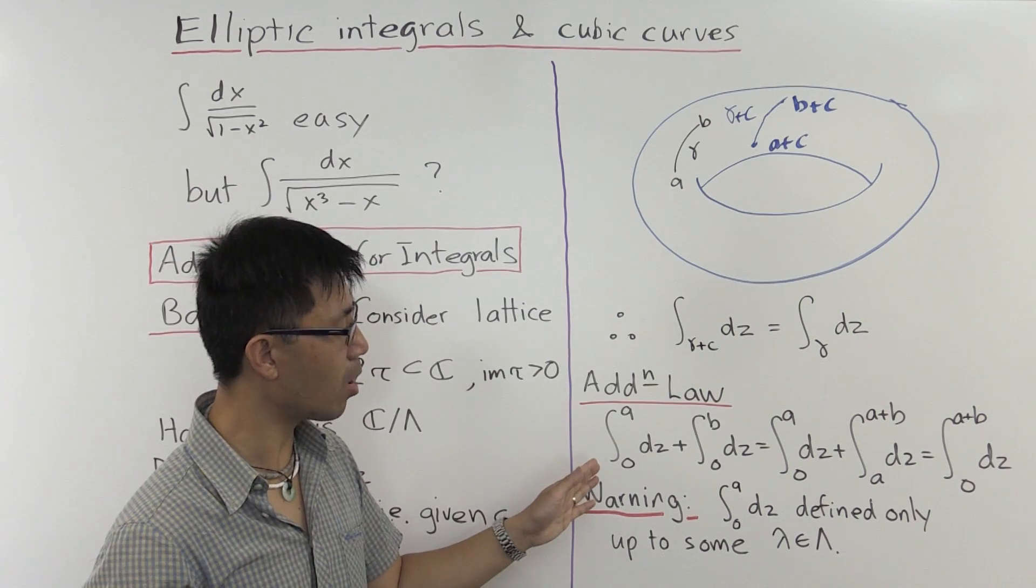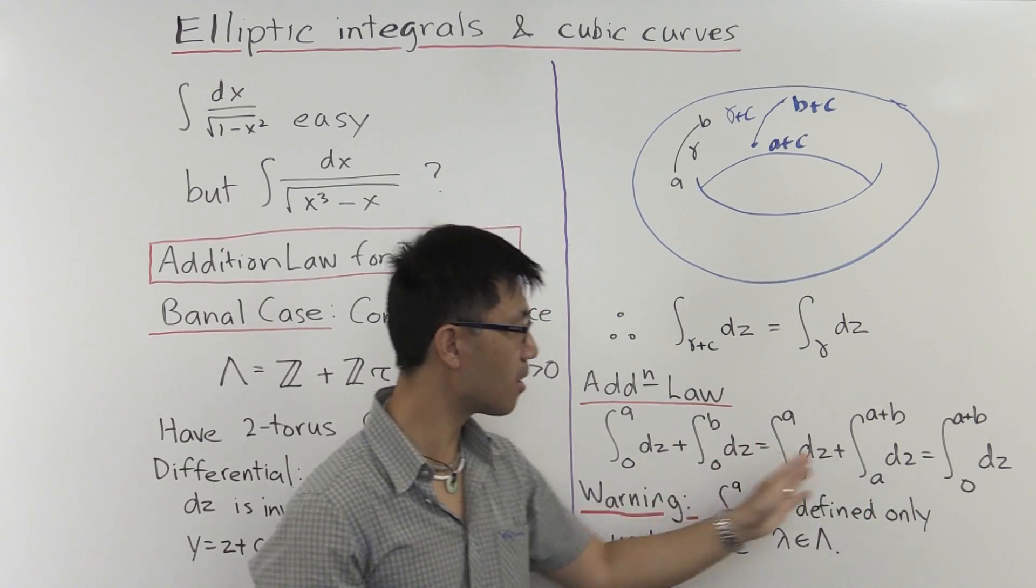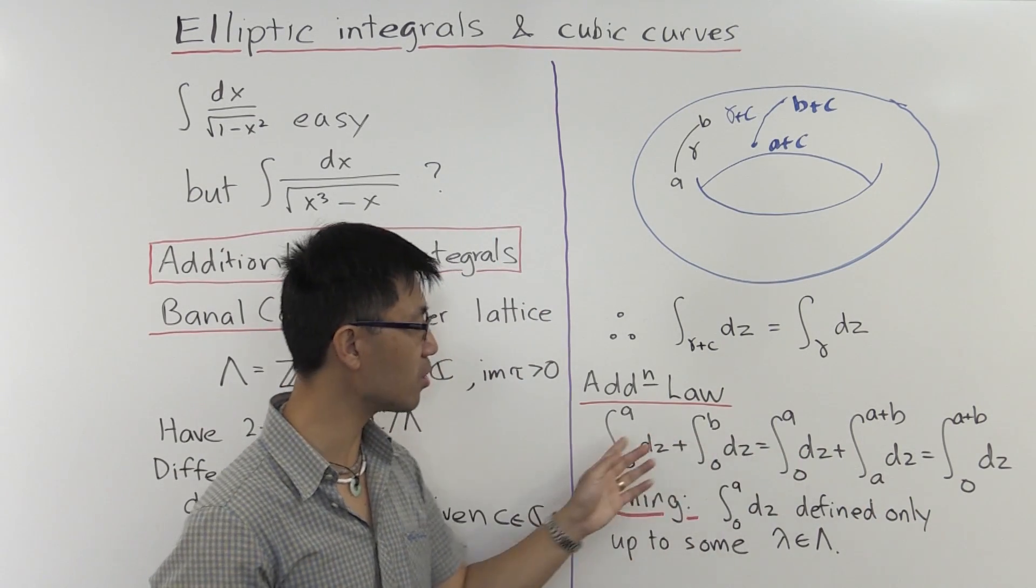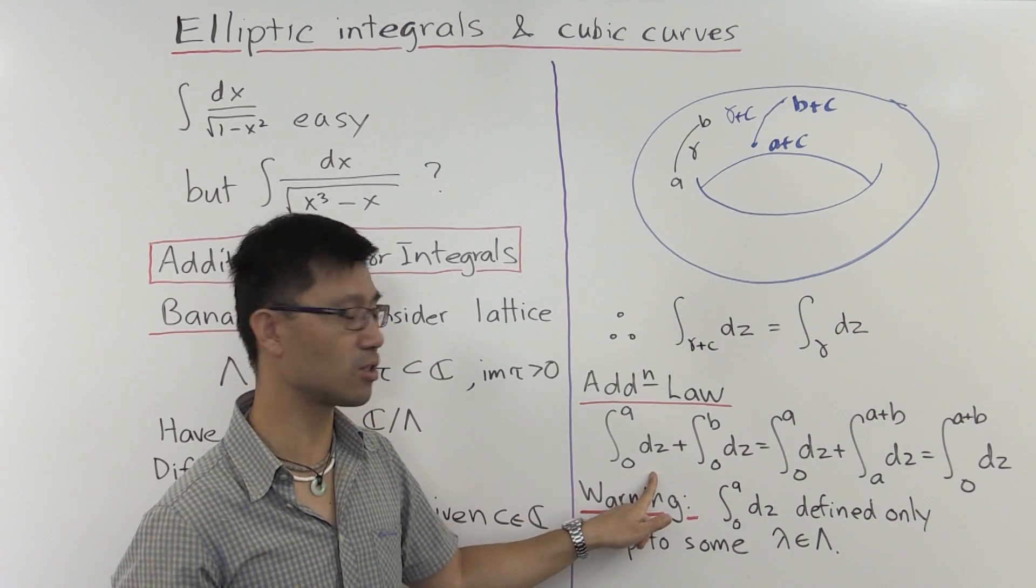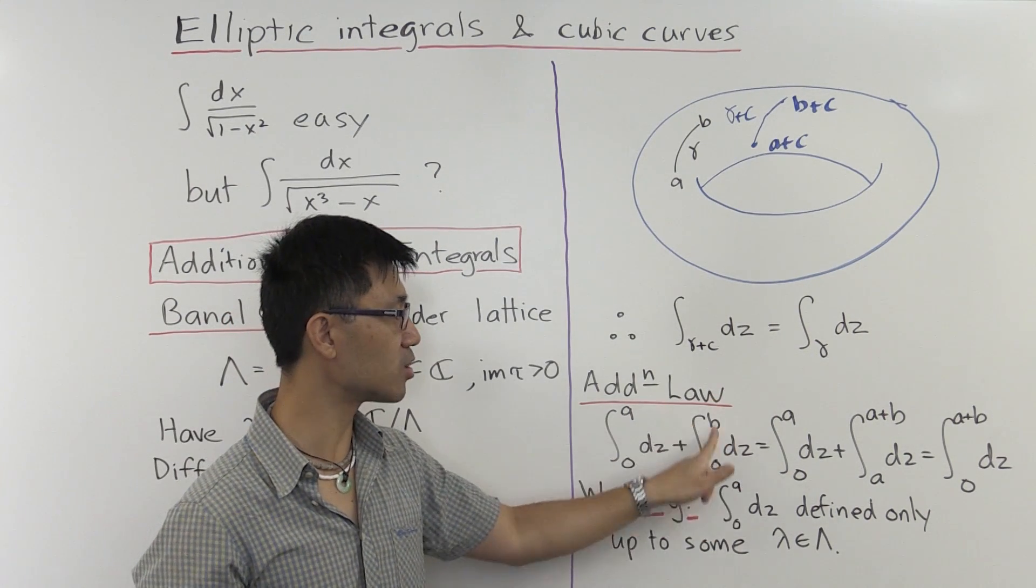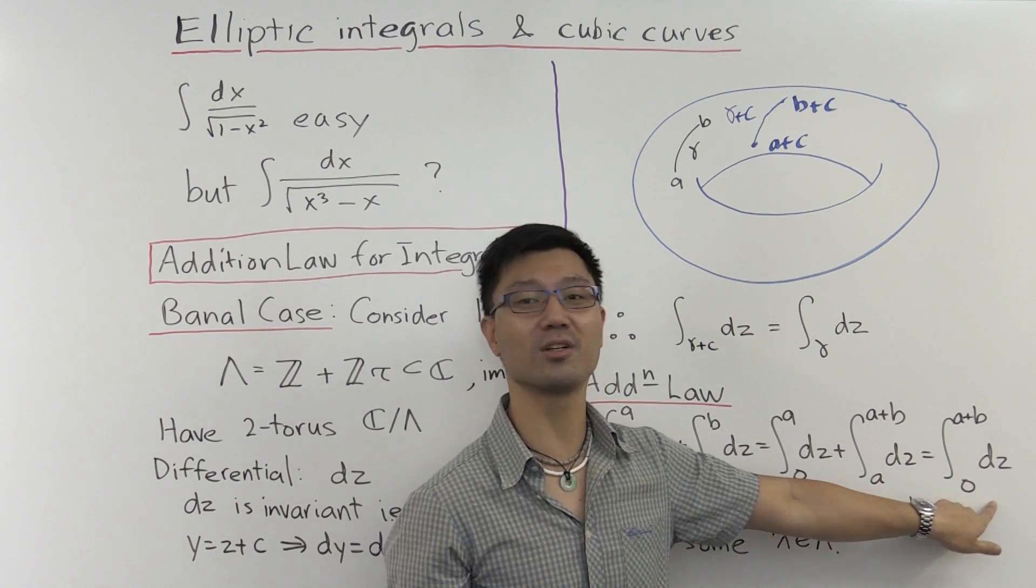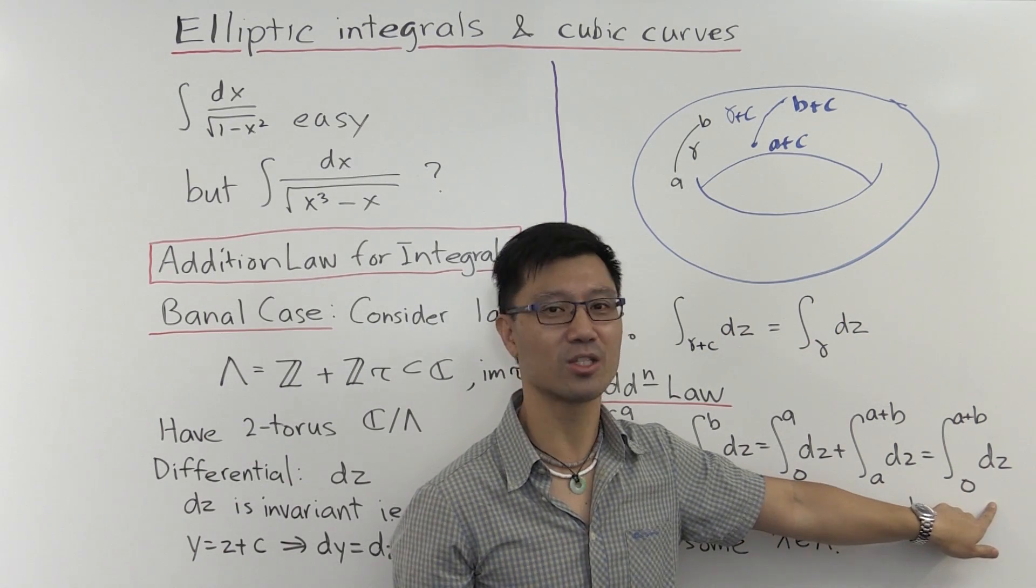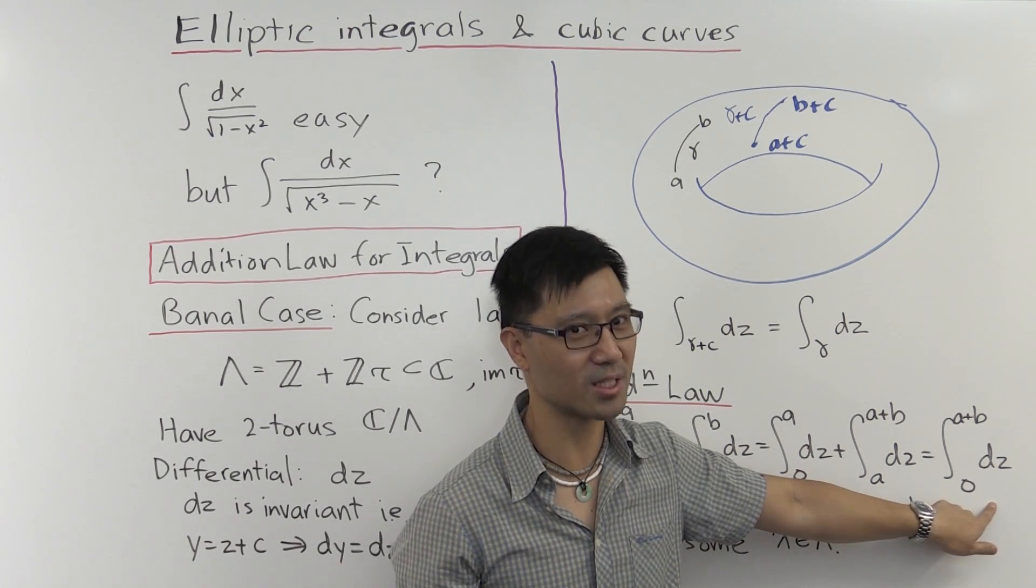Now, you might say, well, this is clear because if you compute the actual values, this is just a, this integral is a, this integral is just b, and this integral is just a + b. So really, we haven't gained anything that we didn't already know.